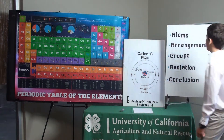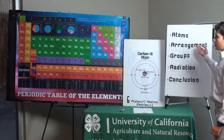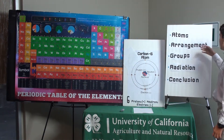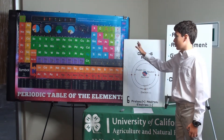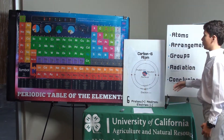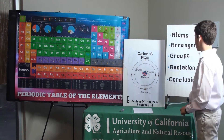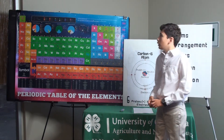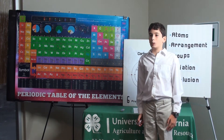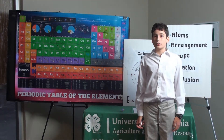Now you know about atoms and what they do, the arrangement of the periodic table, the different groupings, and about radiation — why it happens and why it's dangerous. Now you know almost everything you need to know about the periodic table. Thank you for watching, and are there any questions?